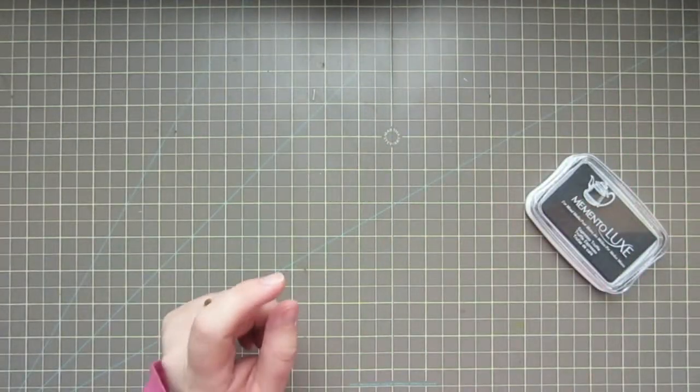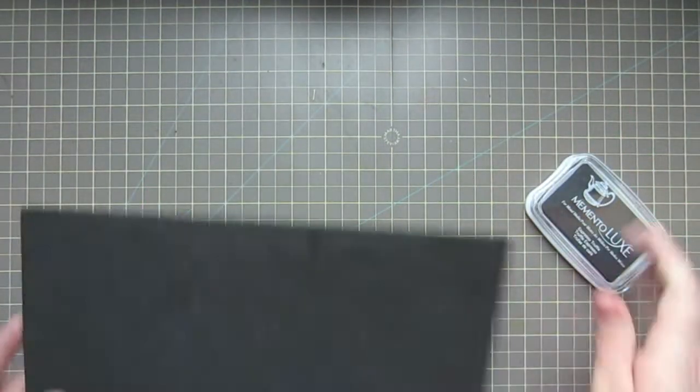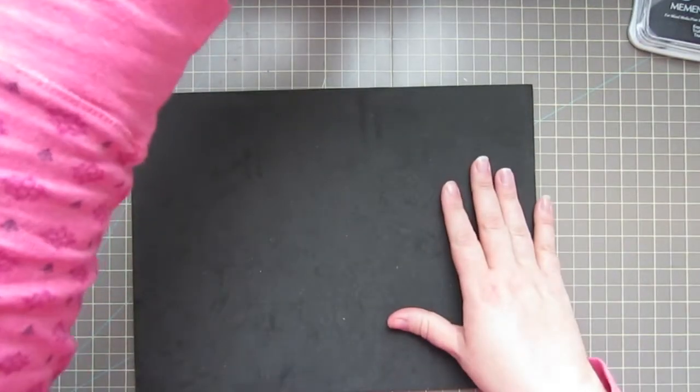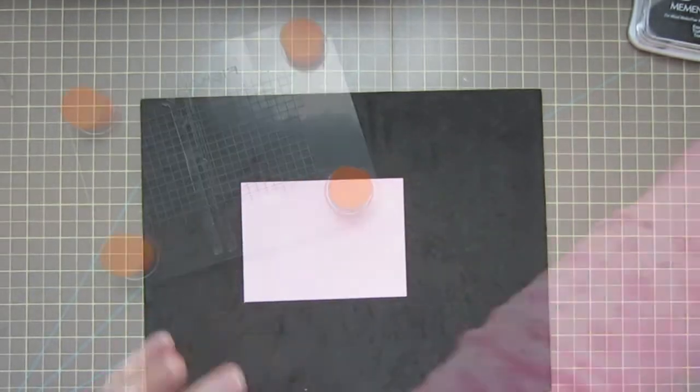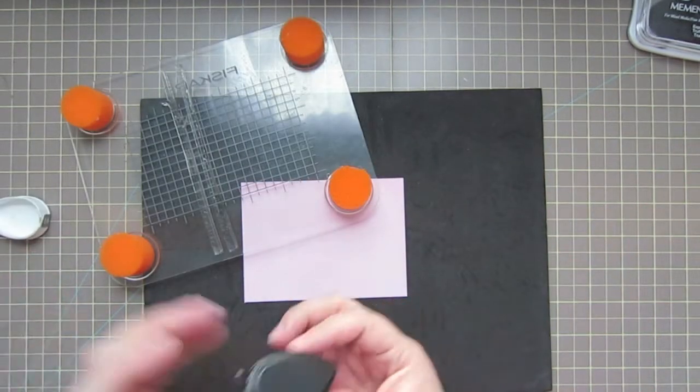To begin, I'm going to start by stamping my main panel. I'm just laying down a black foam cushion that I like to use to get a really good impression, and I'll stamp those in some Gray Flannel Memento ink.